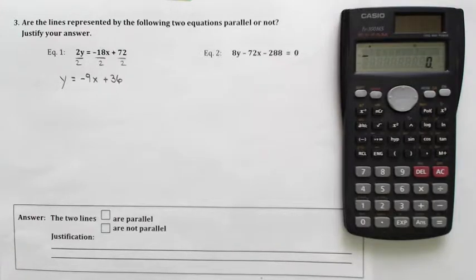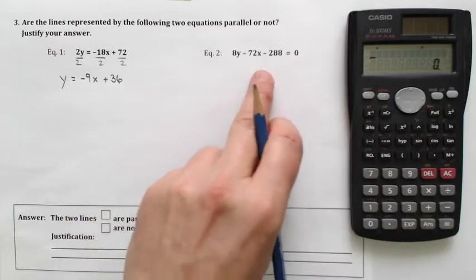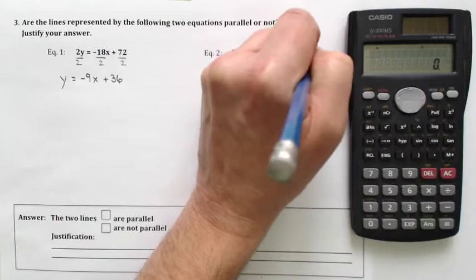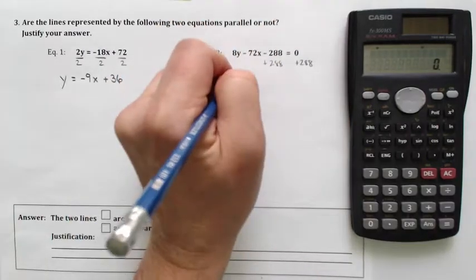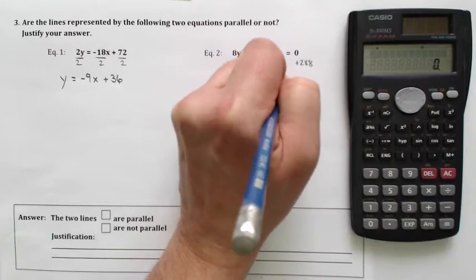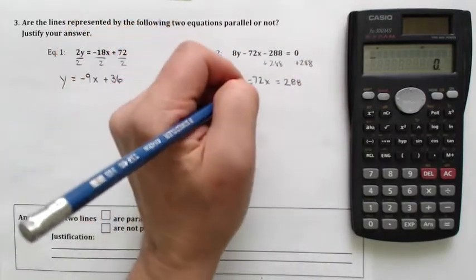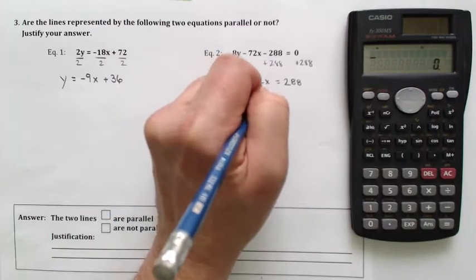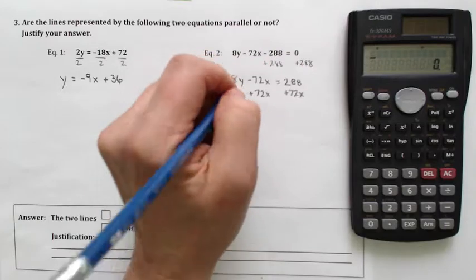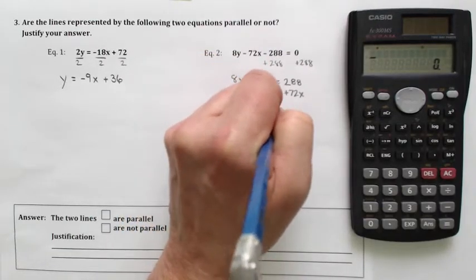And on the second equation, I've got a little bit of extra work to do. So I'm going to add the 288 to both sides. And that's going to leave me with 8y minus 72x is equal to 288. And then I'm going to add 72x to both sides. And that's going to leave me with 8y is equal to 72x.